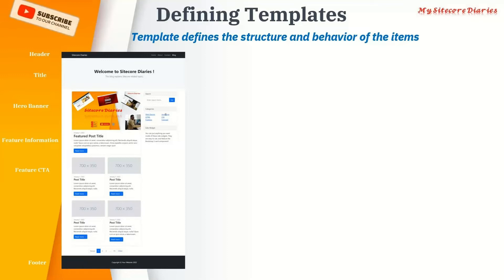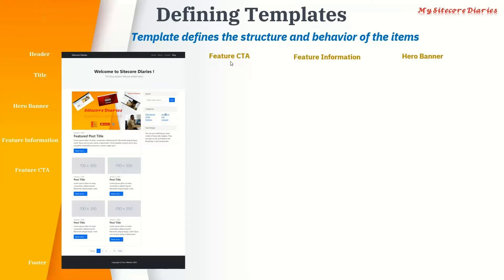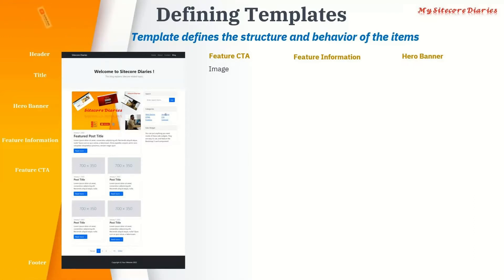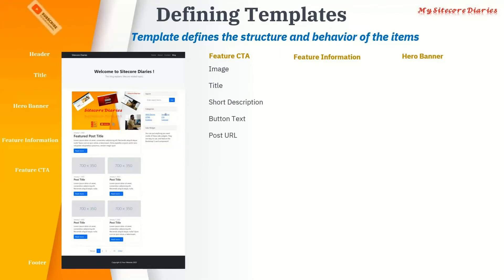For our study purpose, we will pick only hero banner, feature information, and feature CTA. If you want to hold the information related to feature CTA — this part where you have an image and details — what is required? First, an image. Then it will hold a title, a short description, a button text, and a URL. If you click the button, it will go to that URL.